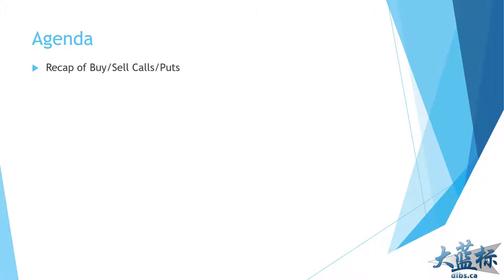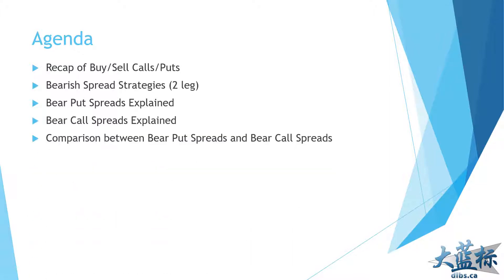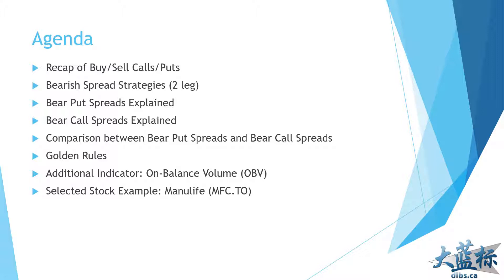Here's the agenda we've planned for you today. A quick recap of the basics of buys and sells of calls and puts that we've done in prior videos. Then we will introduce two new strategies, both belonging to the bearish spreads strategy family — a bear put spread followed by the bear call spread — and a comparison between these two with golden rules we always follow. We'll also introduce a new indicator called on balance volume. Today's selected stock we will analyze is Manulife, followed by a recap of the free tools and links for the free options play for Canada and the one-month trial for the USA.